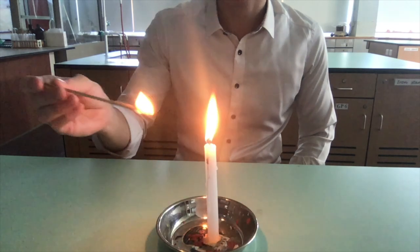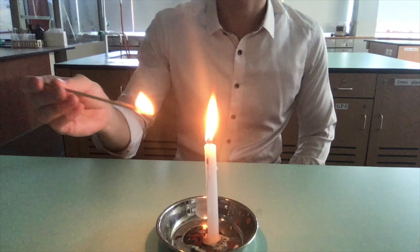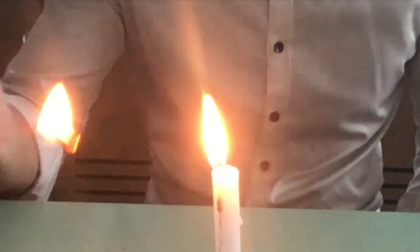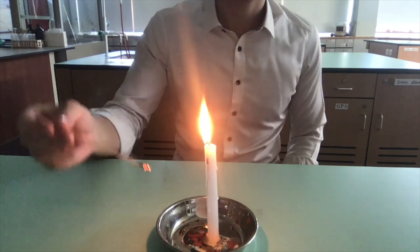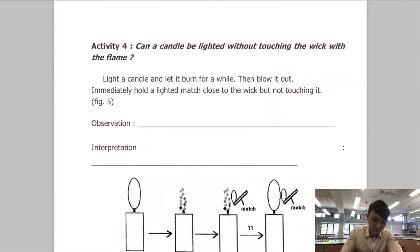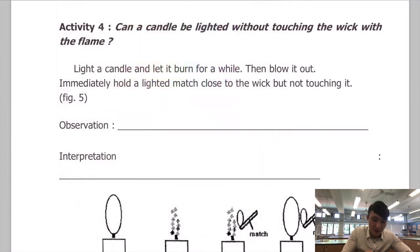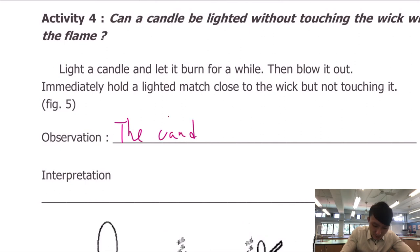Activity 4: we first blow out a candle, then put a burning match next to the wick but not touching it. We are trying to see whether we can relight the candle without the flame actually touching the wick. The candle relights. So for Activity 4 — can a candle be lighted without touching the wick with the flame? It works. The observation is: the candle can be relighted.